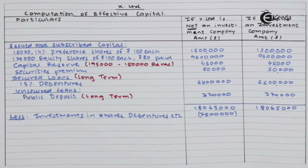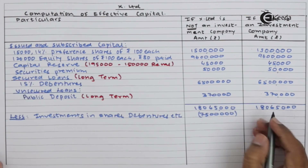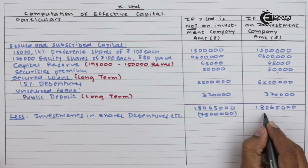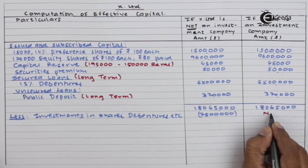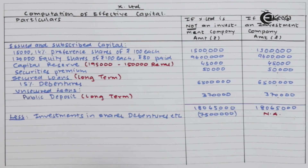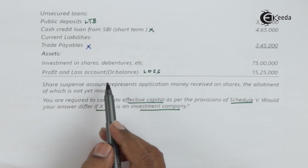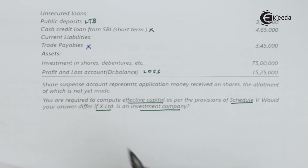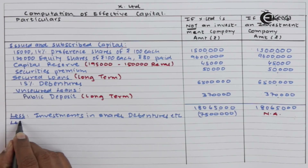In the investment company case, the investment amount need not be deducted — it is not applicable. However, the debit balance of the Profit and Loss account is purely a loss, so that will always be deducted.